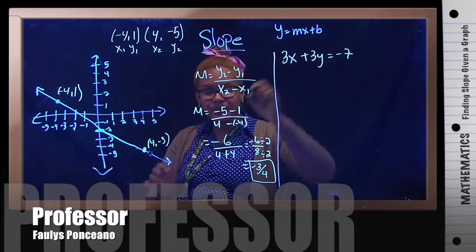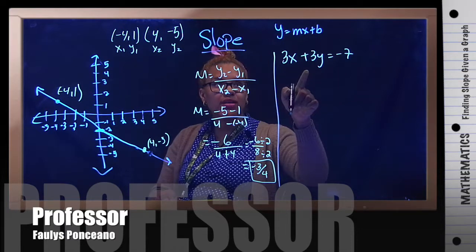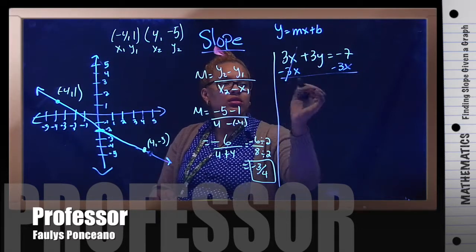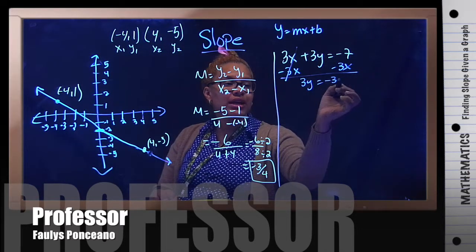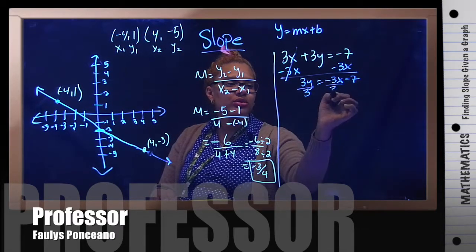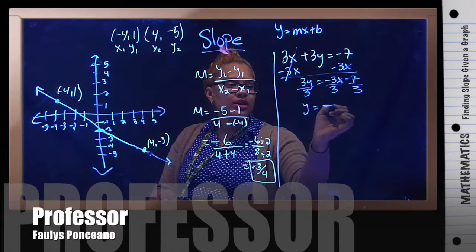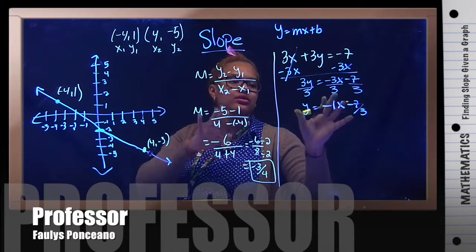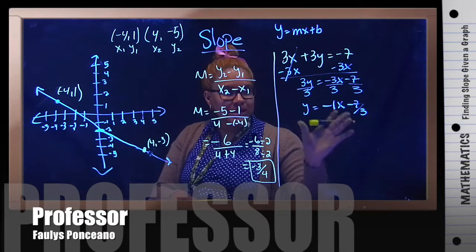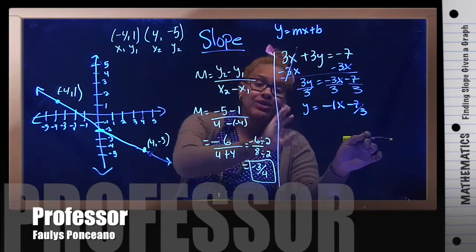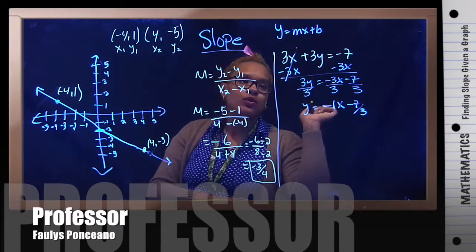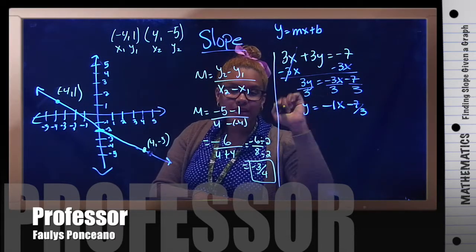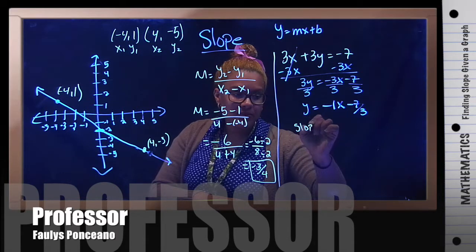I'm going to solve for y. Start by subtracting 3x from both sides: 3y equals negative 3x minus 7. Then divide both sides by 3: y equals negative 1x minus 7 over 3. This is now in slope-intercept form, so I can just look at it and read off the information. The y-intercept is negative 7 over 3, and the slope is negative 1.